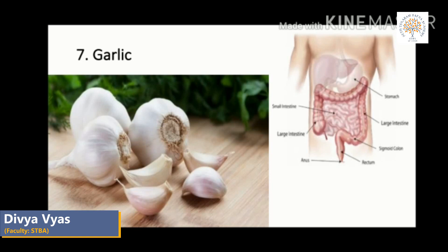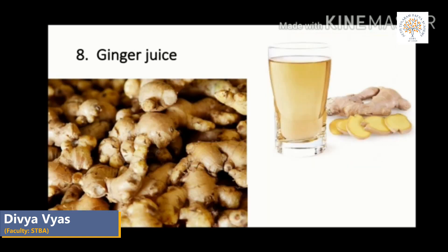Garlic is used for conditions including high cholesterol, heart attack, heart disease and hypertension. Ginger juice is good for the throat and for digestion — it has been used to help digestion, reduce nausea, and help fight the flu and common cold. Ginger can be used fresh, dried, powdered, or as an oil or juice. Students, the remaining part of this chapter will continue in our next session. Thank you.